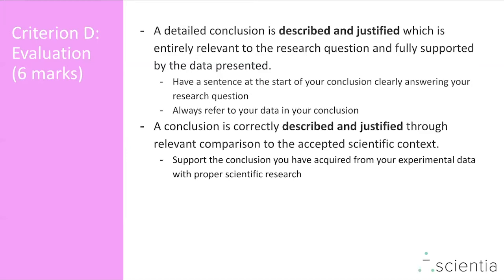The next criterion is evaluation, also worth six marks. This is where you include your conclusion and evaluation. The most important thing to take away is to have a sentence at the start of your conclusion that clearly answers your research question. Always refer to your data in your conclusion as well. The data analysis from your previous section should have given you some sort of correlation between the dependent and independent variable. In the conclusion, you put that into the real-life situation your investigation is centered on, taking the numerical data from your analysis and putting it into the perspective of your chosen real-life context.